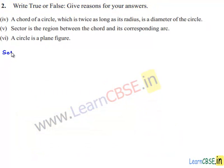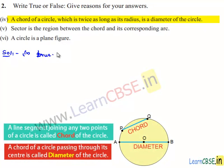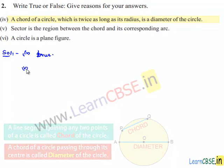Moving on to the fourth bit: a chord of the circle which is twice as long as the radius is called the diameter of the circle. That is true, because we know that a chord passing through the center of the circle has a length equal to two times the radius. Therefore, that chord is the diameter of the circle.